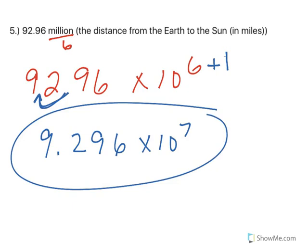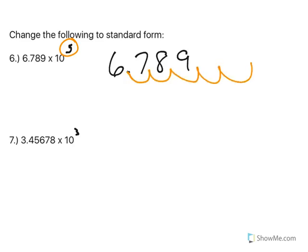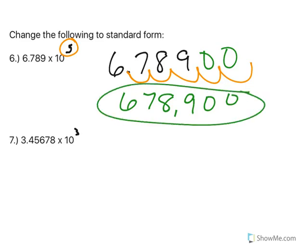So that's going from standard to scientific. Now, let's go the other way. I've got 6.789 times 10 to the 5th. This exponent of 5 is going to tell us how many places to move the decimal point. And because 5 is positive, that means our number is going to get bigger. I'm going to move it five places: 1, 2, 3, 4, 5. Any idea what I'm going to put in those empty humps? Zeros. So my answer will be 678,900.